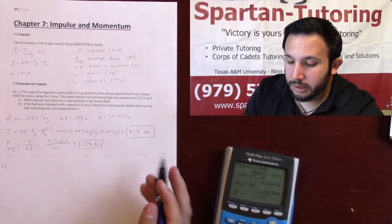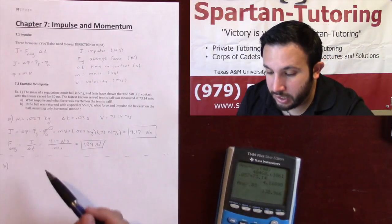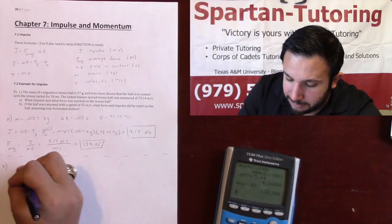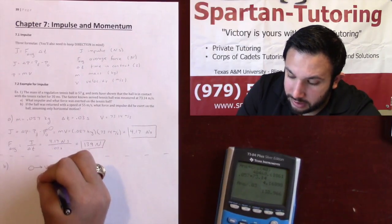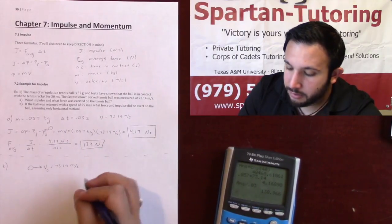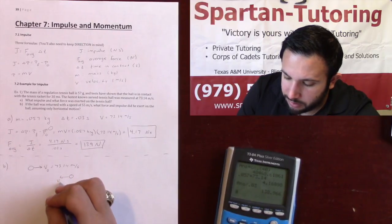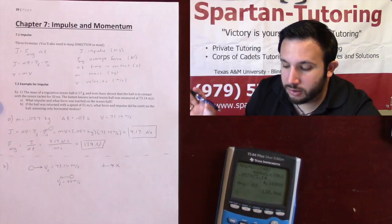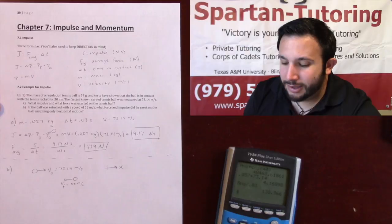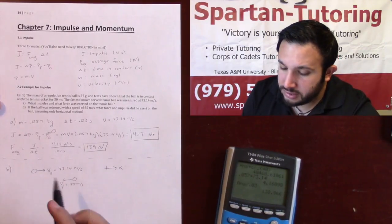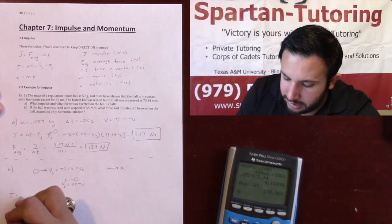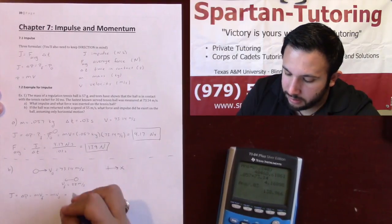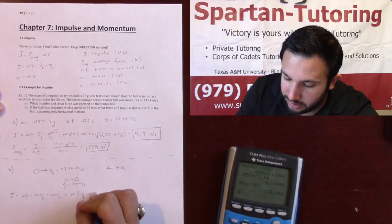Part B: if the ball is returned with a speed of 55 meters per second, what force and impulse were exerted on the ball, assuming only horizontal motion? The tennis ball is initially moving at 73.14 meters per second, then struck back with a final velocity of 55 meters per second. I'll call to the right the positive x direction — just make it consistent.